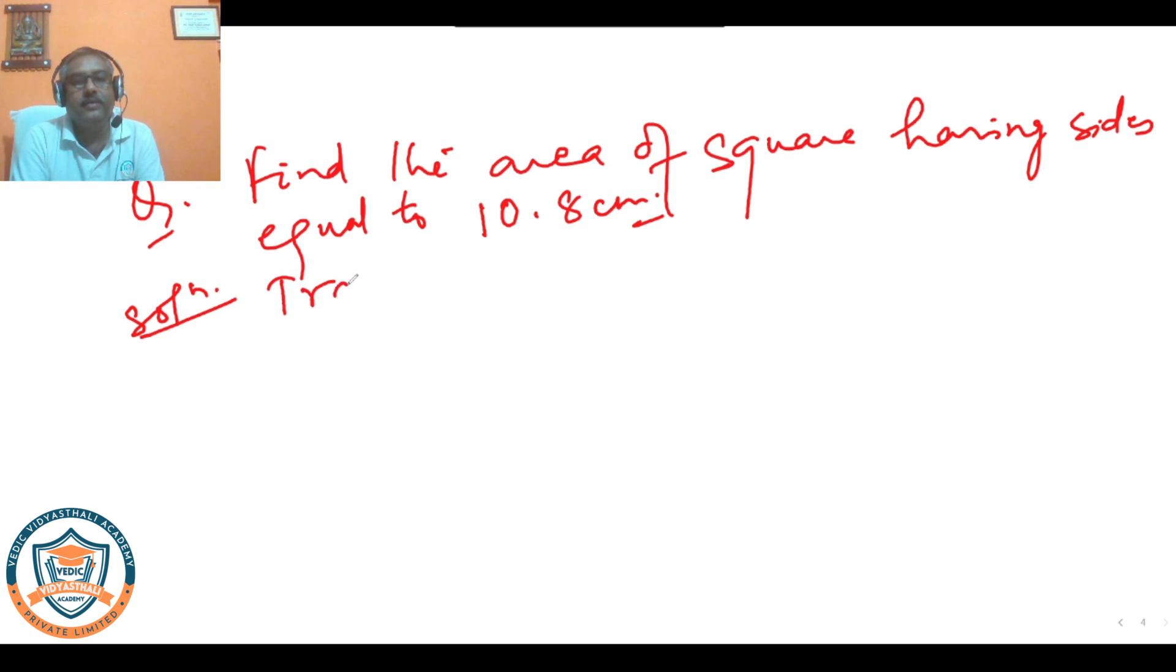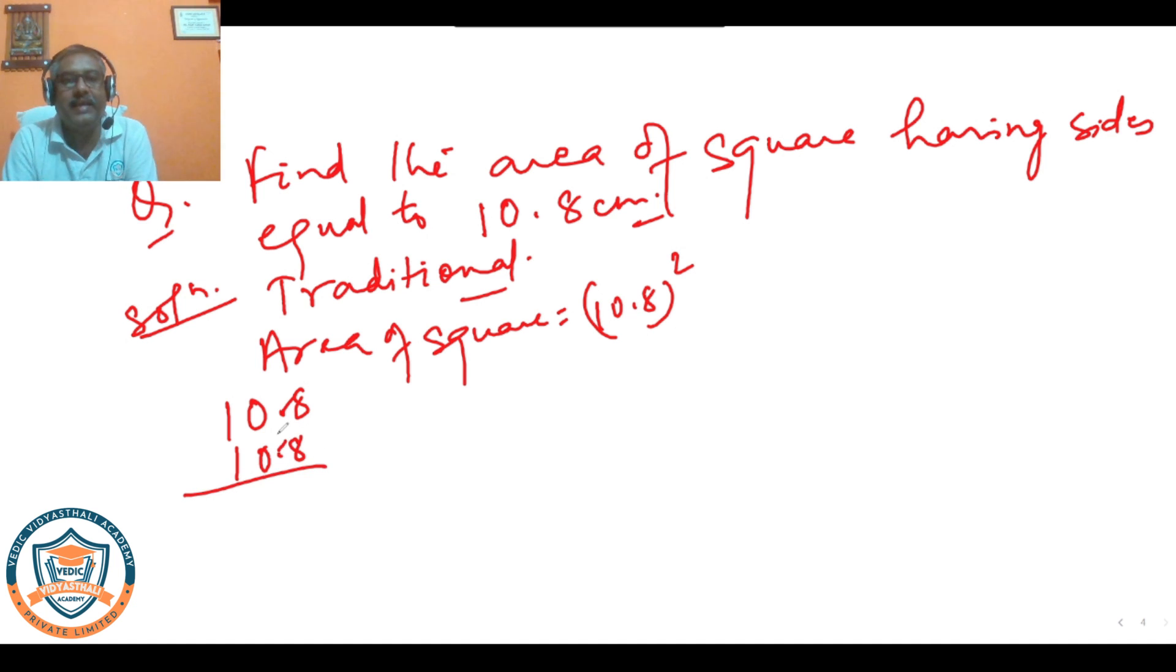As per traditional method, we have to find the area. Area of square equals 10.8 square, which means 10.8 into 10.8. We will ignore the decimal for the time being. 8 times 8 is 64, so 4 here and 6 carries. 1 times 8 is 8, total 64.